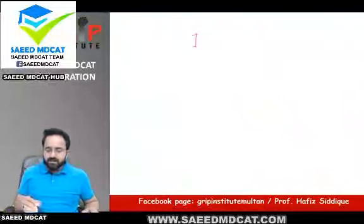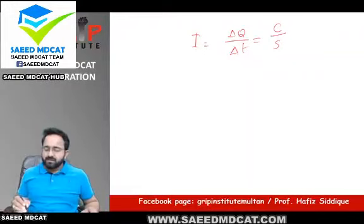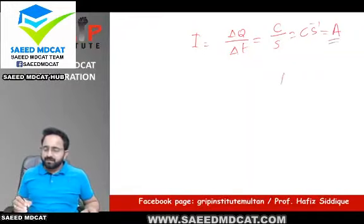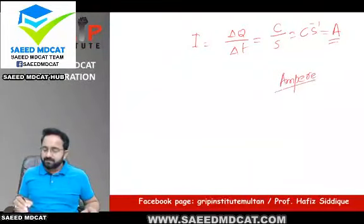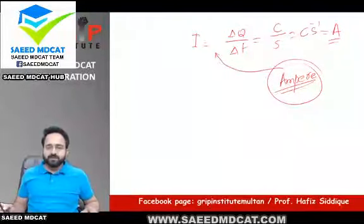Current ka unit — yaani, bahut aasani se find kiya ja sakta hai — Coulomb per second. Coulomb per second ko hum likhte hain: Ampere. Ampere ek scientist tha jis ke naam pe current ka unit Ampere bana.